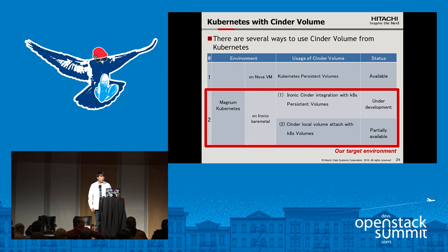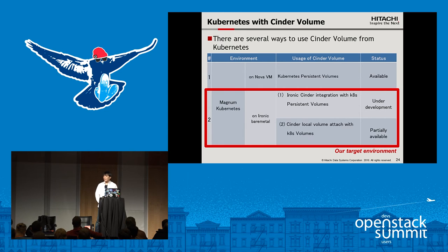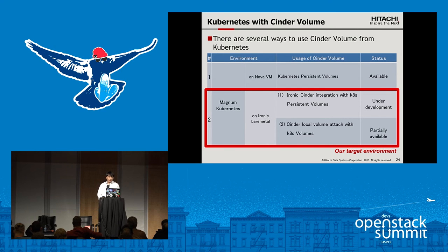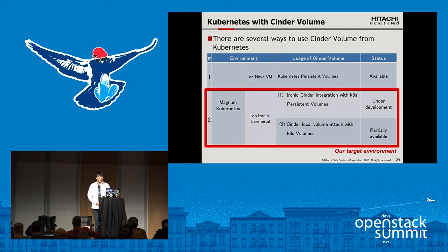The first bare metal option is Ironic-Cinder integration with Kubernetes persistent volumes — this is still under development, and hopefully will be available at the Ocata phase. The second option is Cinder local volume attachment with Kubernetes volumes, which is partially available, meaning currently only iSCSI and RBD protocols are supported. Our target environment is Ironic bare metal, but let me first explain the Kubernetes on Nova VM case.